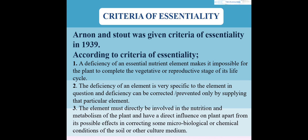The third statement: the element must be directly involved in the nutrition and metabolism of the plant, and must have a direct influence on the plant, apart from its possible effects in correcting some microbiological or chemical conditions of the soil or other culture medium. Essential elements should be directly involved in the growth and metabolism of the plant. This is the criteria of essentiality by which we can divide the 17 essential nutrients from the 90 non-essential nutrients.